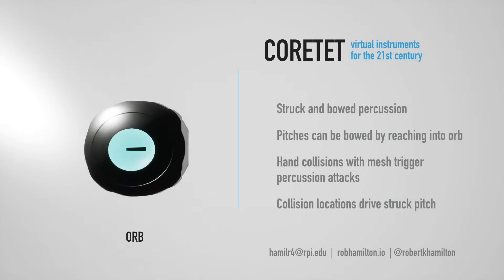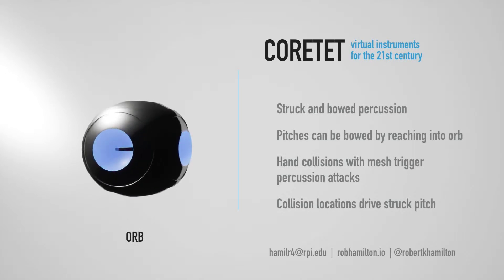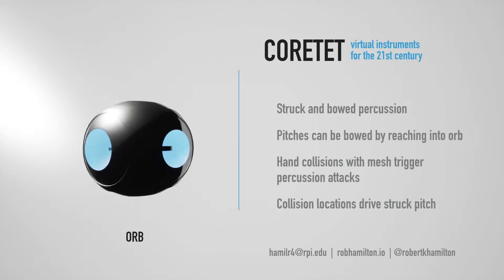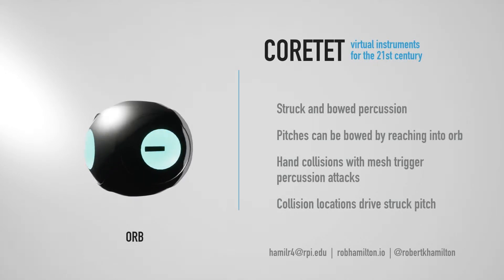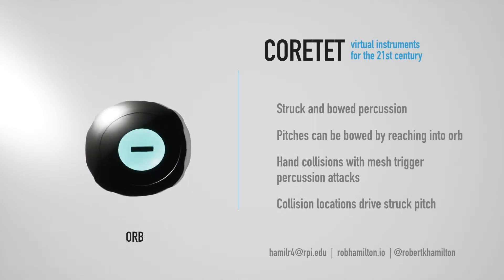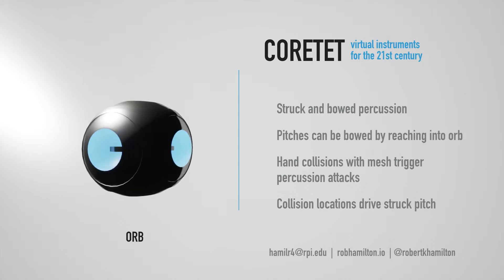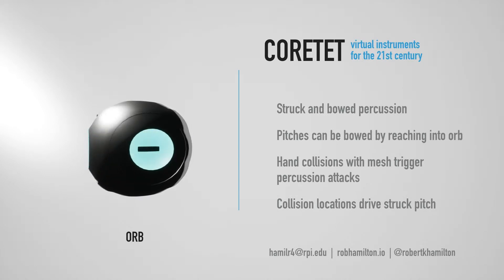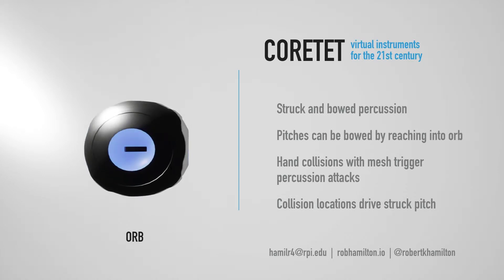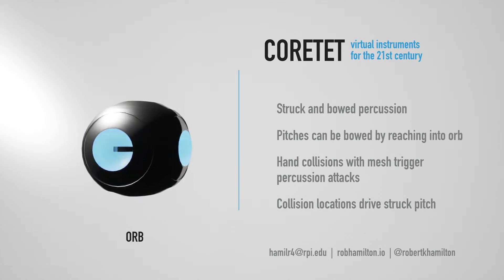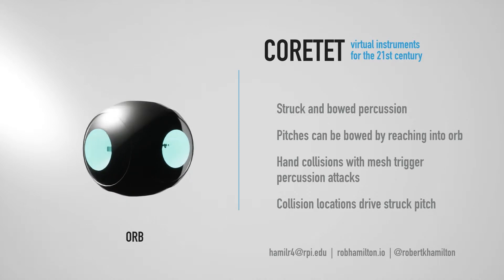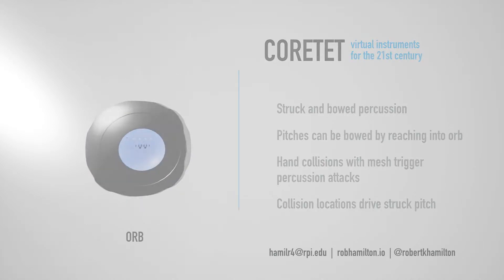One experimental Quartet configuration is the orb, a percussive instrument designed to be struck with each performer's virtual hands. The orb can also be bowed, resulting in a single pitch similar to a bowed metal plate.